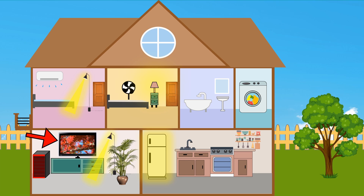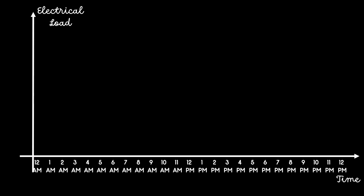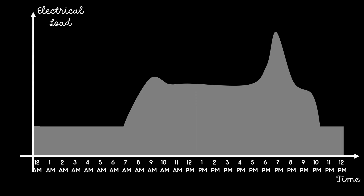Appliances such as television may be used only for a few hours. However, appliances such as refrigerators run 24/7. So overall, if you consider a whole day, the load is not constant.